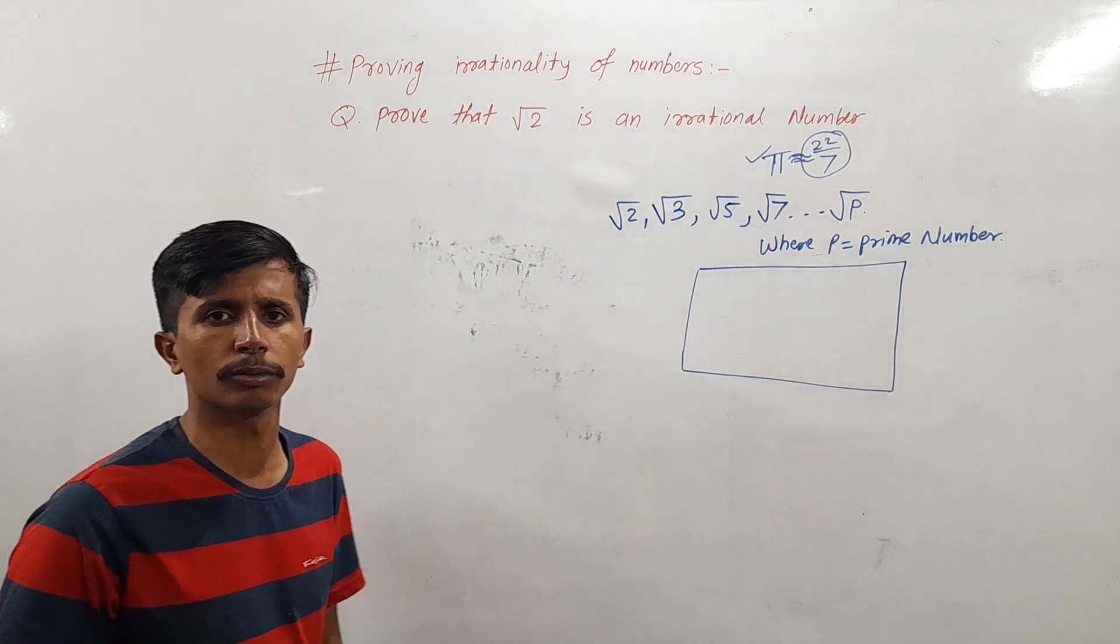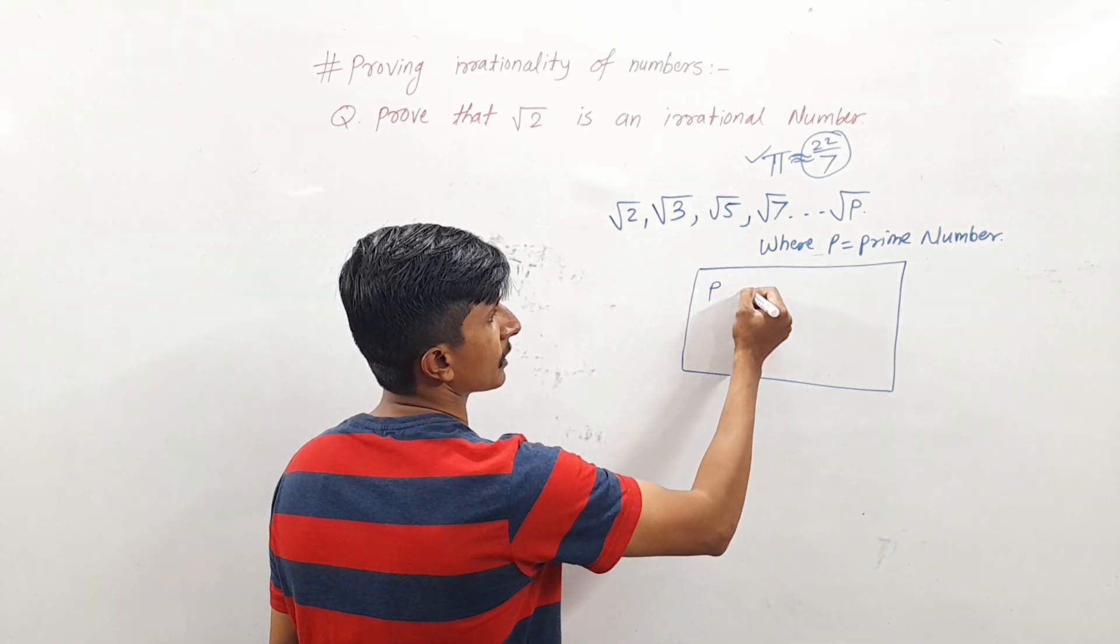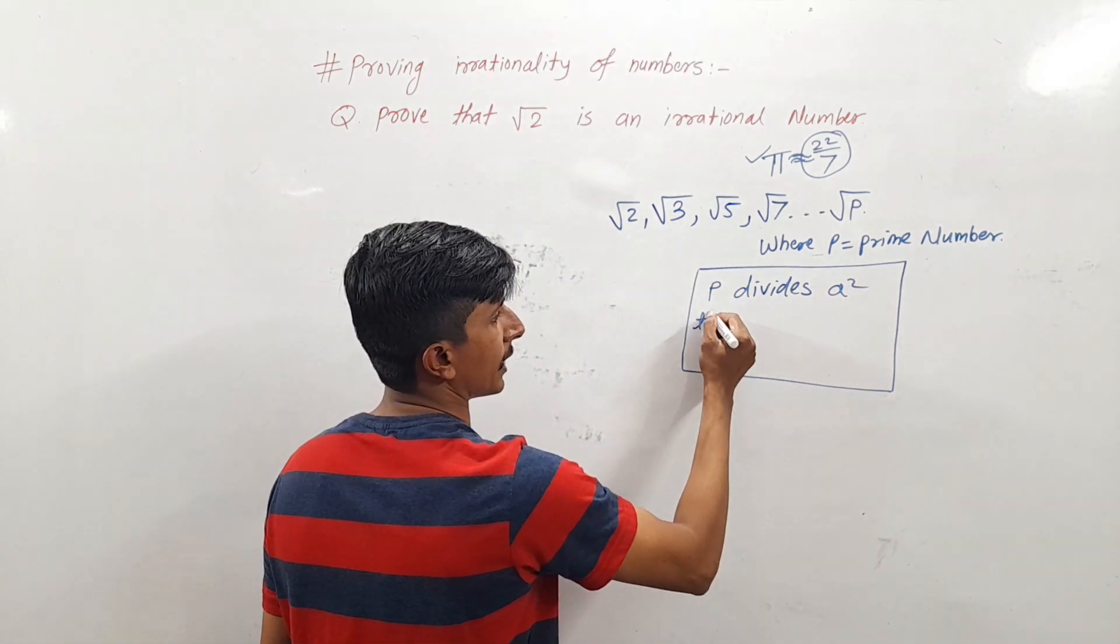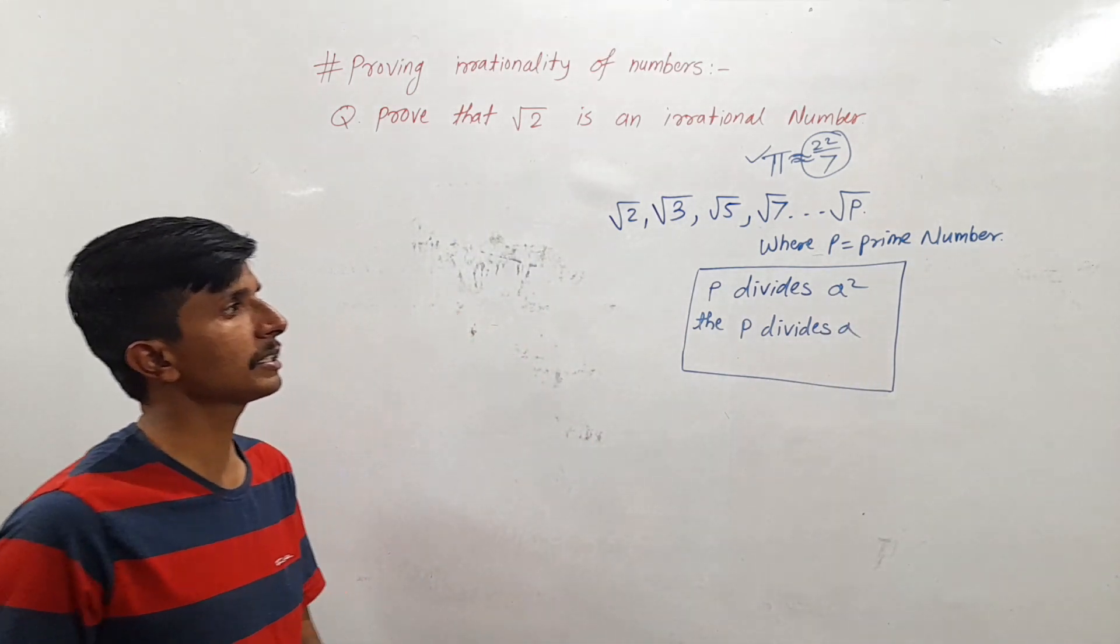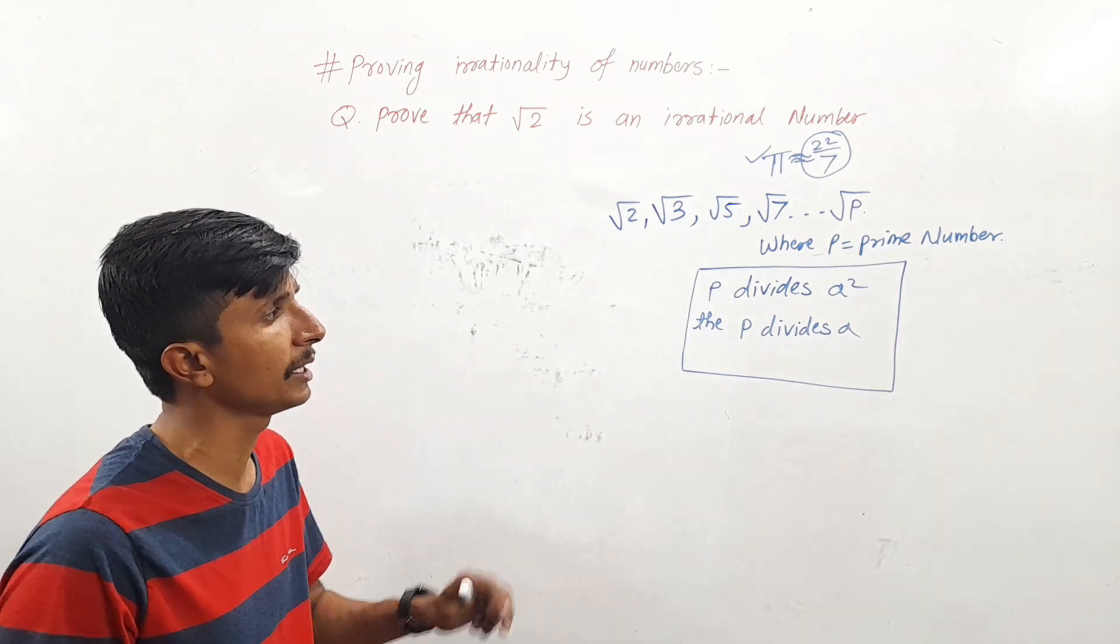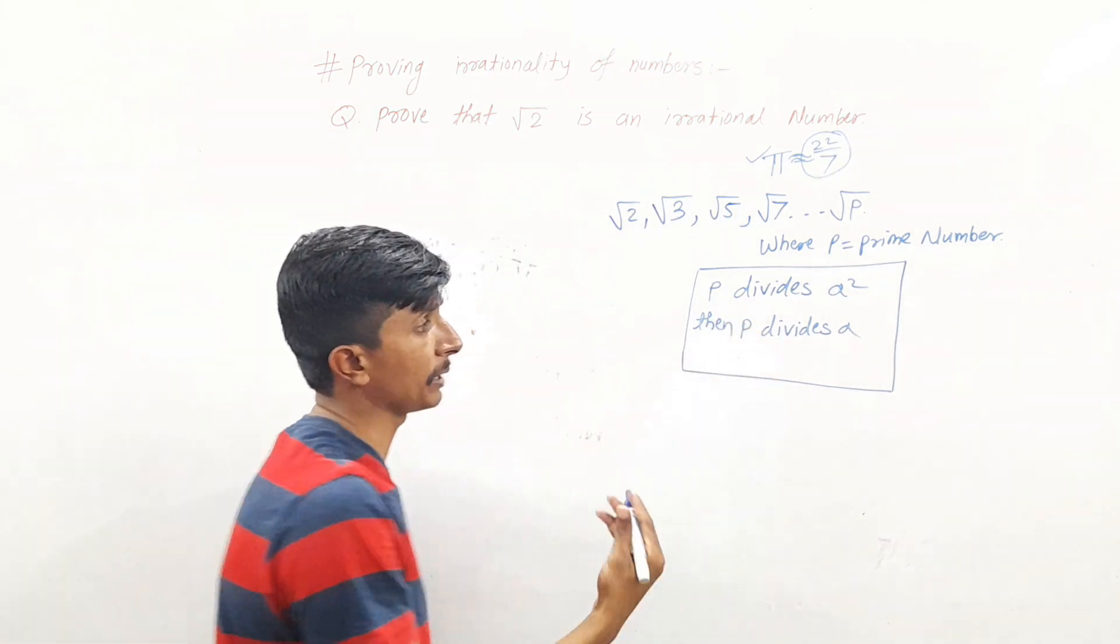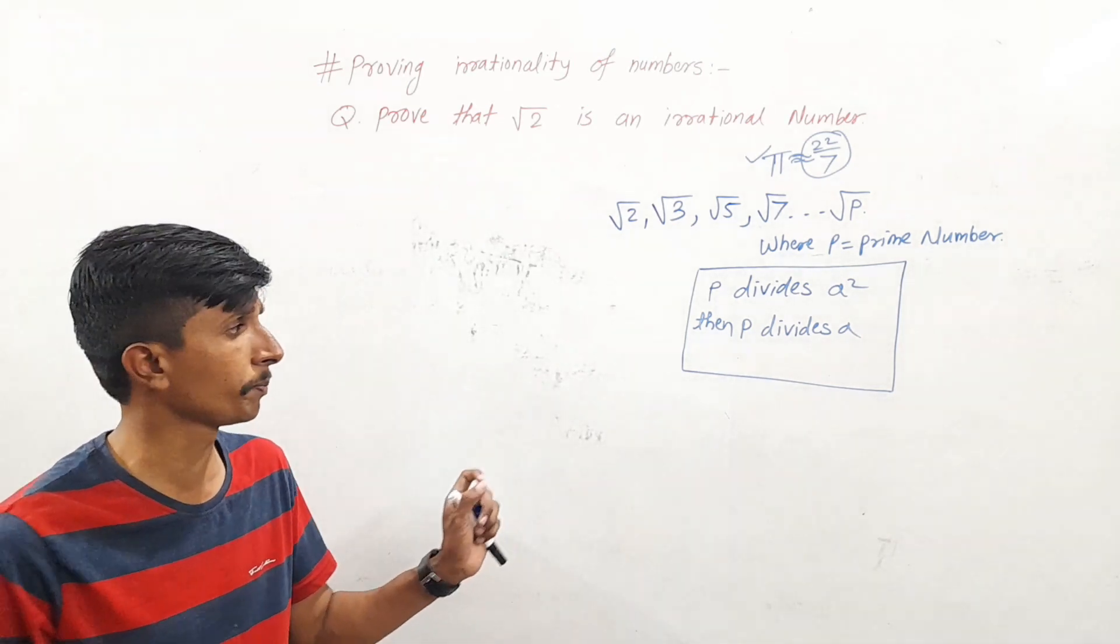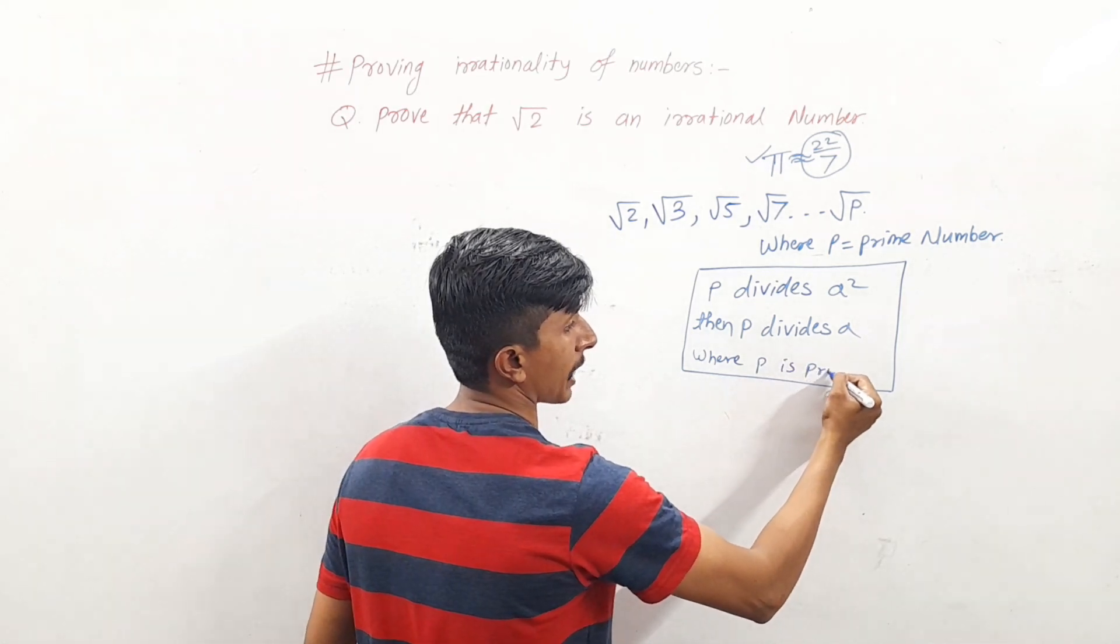So always remember that if p divides a square, then p divides a, where p is a prime number.